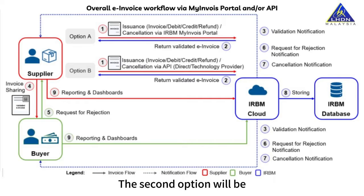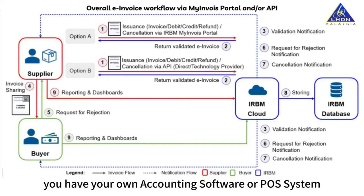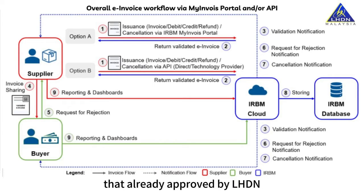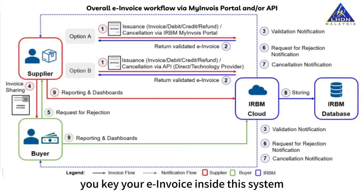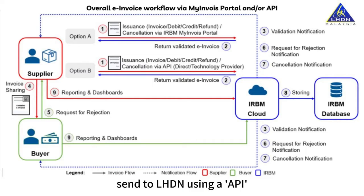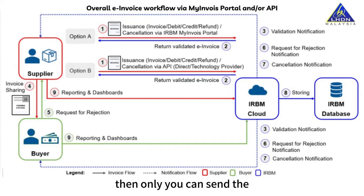The second option is if you have your own accounting software or POS system that is already approved by LHDN. You key in your e-invoice inside this system, send it to LHDN using an API, and then get approval from LHDN. Only then can you send the approved e-invoice to your customer.